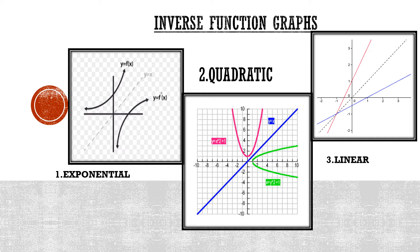Lastly, let us take a look at the linear or straight line graph. The pink line is reflected about the dotted line, which is the line y equals x, to give us the new graph which is the blue graph. That one is known as the inverse of the function.